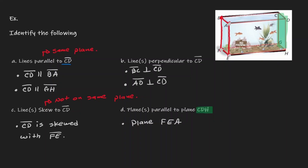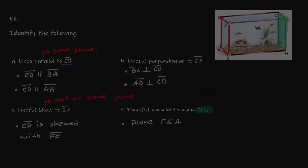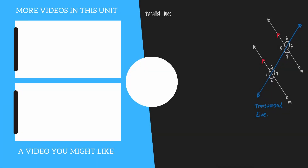Do not forget this big idea: the difference between skew lines and parallel lines. Skew lines are lines that do not intersect and they are on different planes. Parallel lines are lines that do not intersect and they are on the same plane. If you would like to continue to learn about mathematics, you can check out the videos on the left.